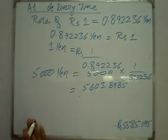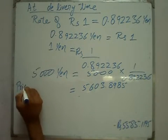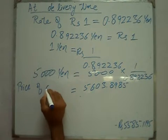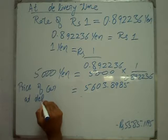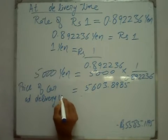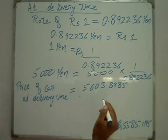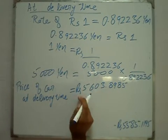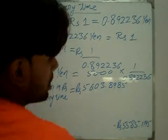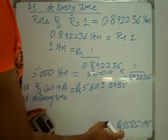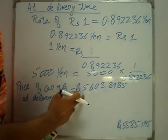Price of car at delivery time — 5000 Yen converted to Rupees. The price of the car in Rupees at delivery time. At contract time, the value was Rs. 5585.1195.